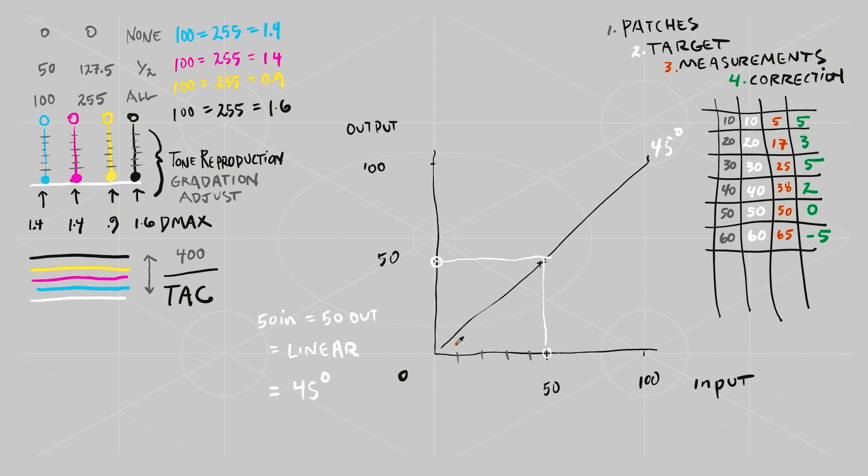Now let's start to plot the measurements in this example in red. 5, 17, 25. You see the shape is below the desired curve, the desired linear response.